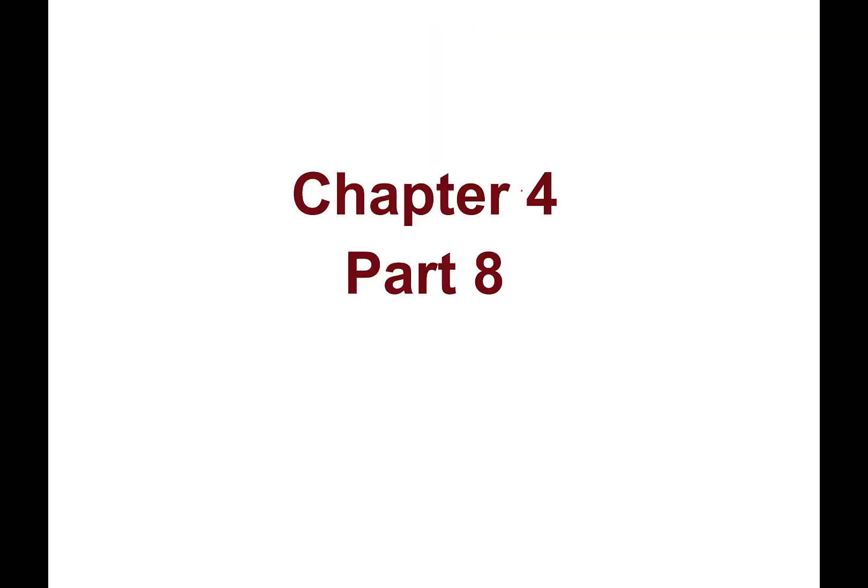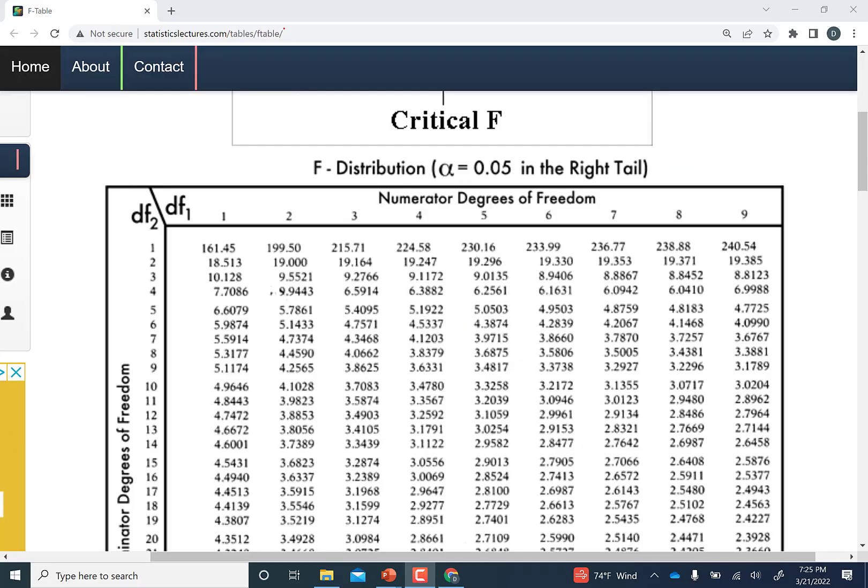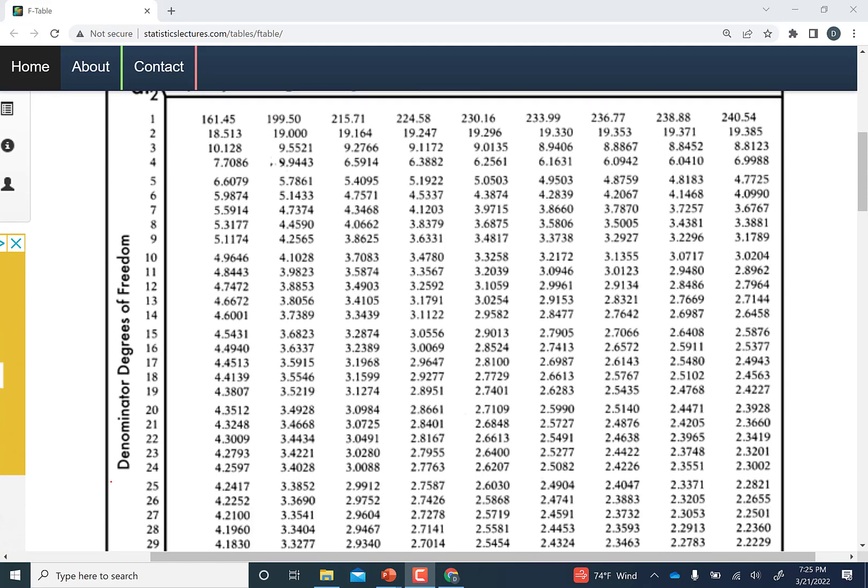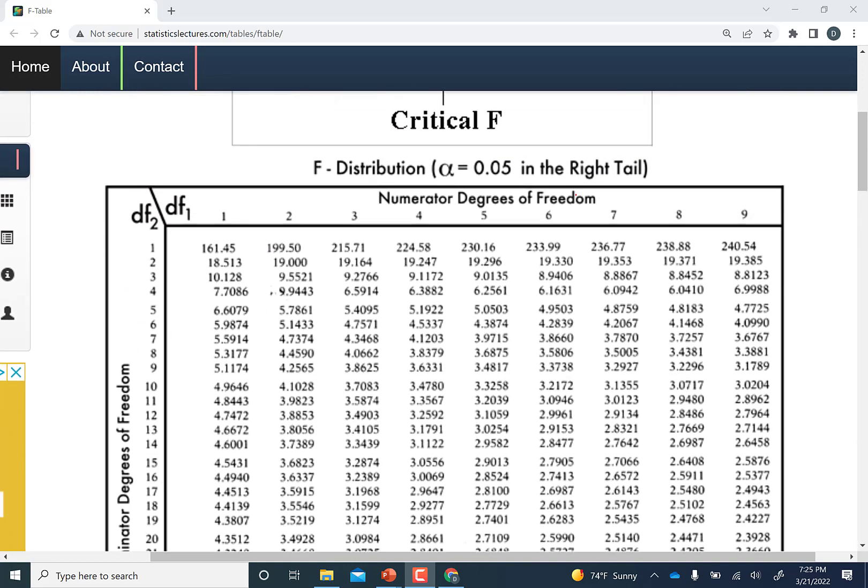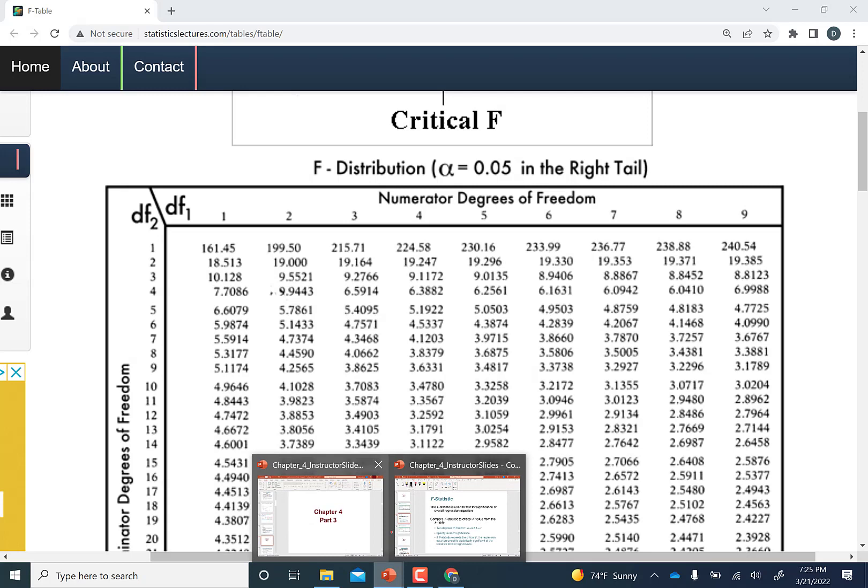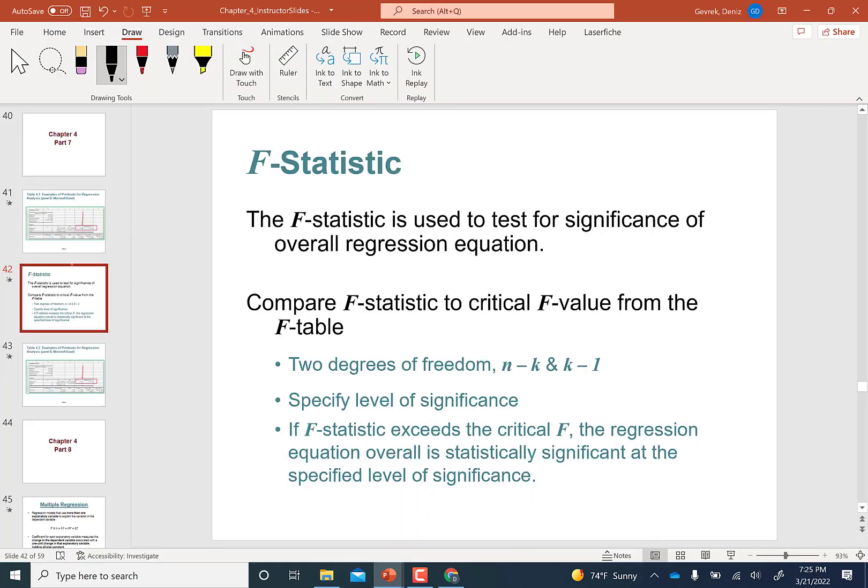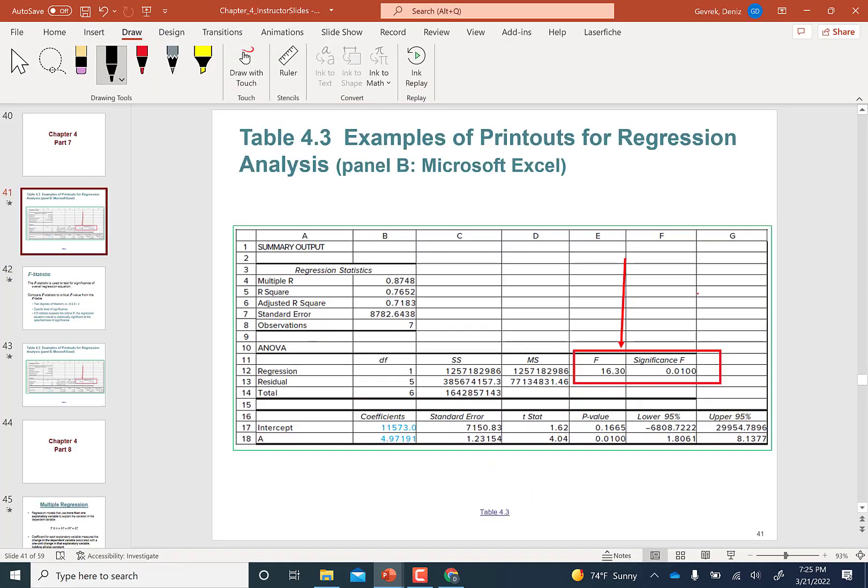For simplicity I pulled up online F tables. What you see is denominator degrees of freedom and numerator degrees of freedom. This is a 5 percent significance level F test. I'm going to go back to the example we had. F statistic is 16.3.